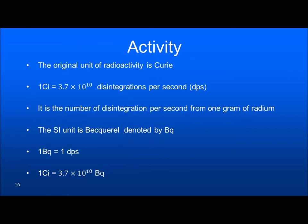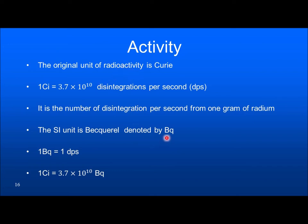How do you measure radioactivity? You use the term activity. The original unit for radioactivity was curie. One curie equals 3.7 × 10¹⁰ disintegrations per second — because originally one gram of radium emits 3.7 × 10¹⁰ disintegrations per second, so that became the standard. In the SI system, the unit of radioactivity is the becquerel. One becquerel equals one disintegration per second. Therefore, one curie equals 3.7 × 10¹⁰ becquerel.